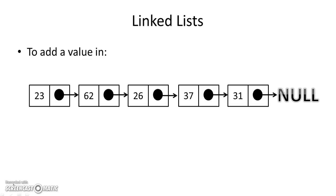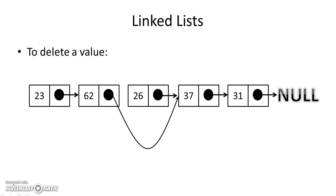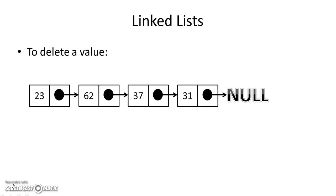The only way we can access a list is by going from the head — the start, 23 — through to the end. If we want to delete a value, for example remove 26, we simply change the pointer of the second element to point to the fourth instead. Even though 26 still exists as a node, it's not part of the linked list because we can't reach it starting from the head.